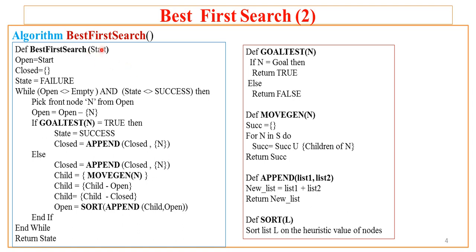Now let us understand the actual algorithm. The best first search algorithm takes a start node. Initially, the open is assigned the start node, closed is empty, and state is failure — because the state variable represents whether the goal node is found or not. If the goal node is found, state will be success. As there is at least one node in the open, the algorithm starts executing the while loop.